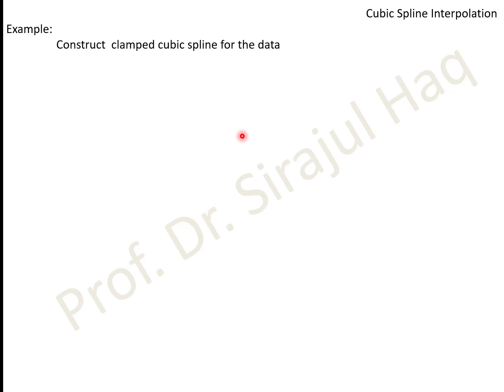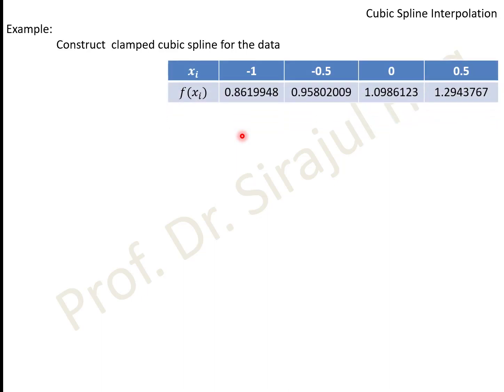Let's consider an example — the same data as in the natural splines case, but this time as clamped splines. The data points are the same, but now the derivative of the function at x0 is −1 and the derivative at x3 is 0.5. The value of n is 3, giving us x0, x1, x2, x3, and we need to find c0, c1, c2, c3 — requiring a 4×4 system.